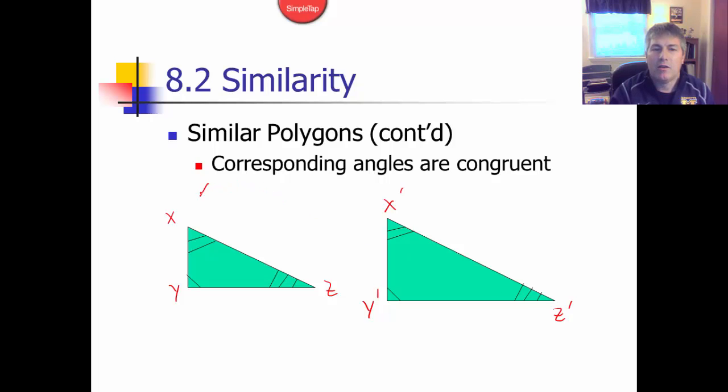we would say triangle X, Y, Z is similar to triangle X prime, Y prime, Z prime. Just like we saw in congruent figures, correspondence is important—corresponding sides and angles match up. Same with similar figures. The order that we write them is important because it tells you what corresponds to what: which side corresponds to which side, and which angle corresponds to which angle.